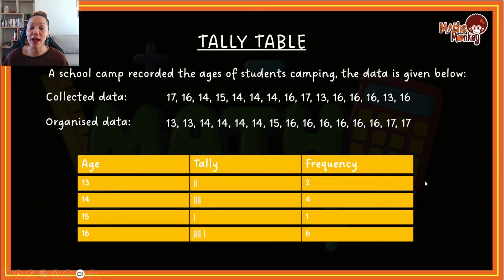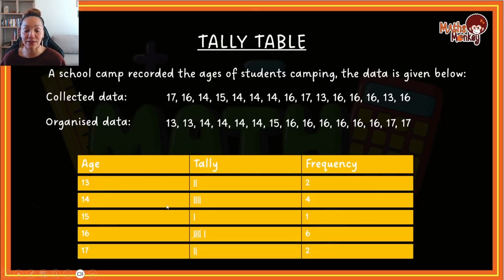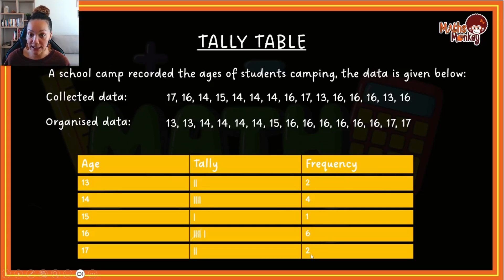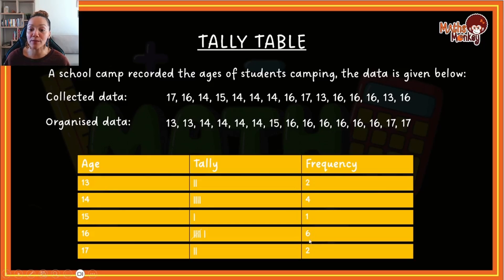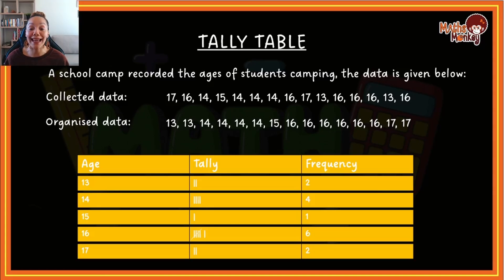Then we have 17, which appears twice, so I've got two strokes and a frequency of two. Now when you add up your frequency column, this answer should be the total number of values you have in your data set. So when you add two plus four plus one plus six plus two, it should give you the total number, and then you know you didn't skip any particular value. And that is essentially how you draw a tally table, which some teachers also call a frequency table.